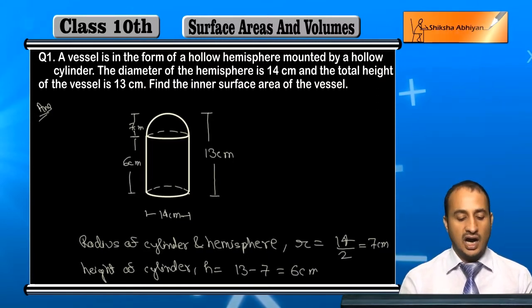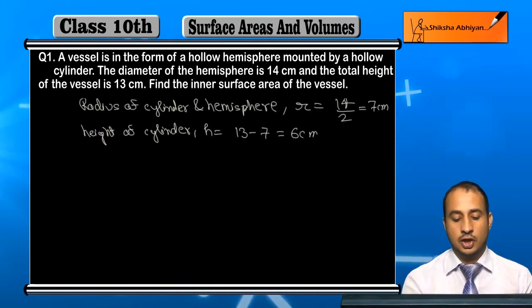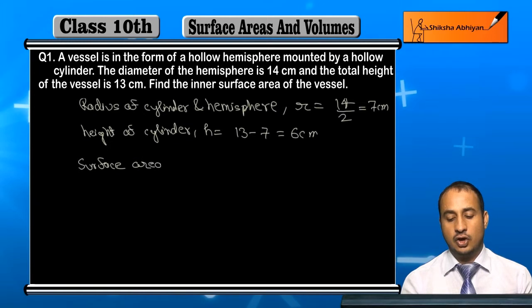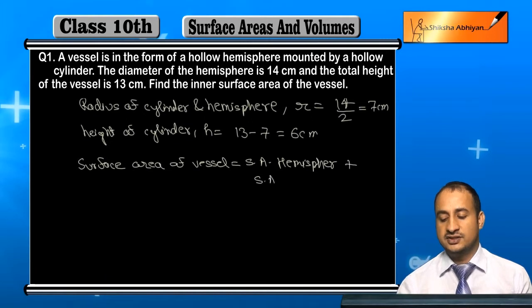Now we can use surface area. So if we use surface area of vessel, this will be surface area of hemisphere plus surface area of cylinder.